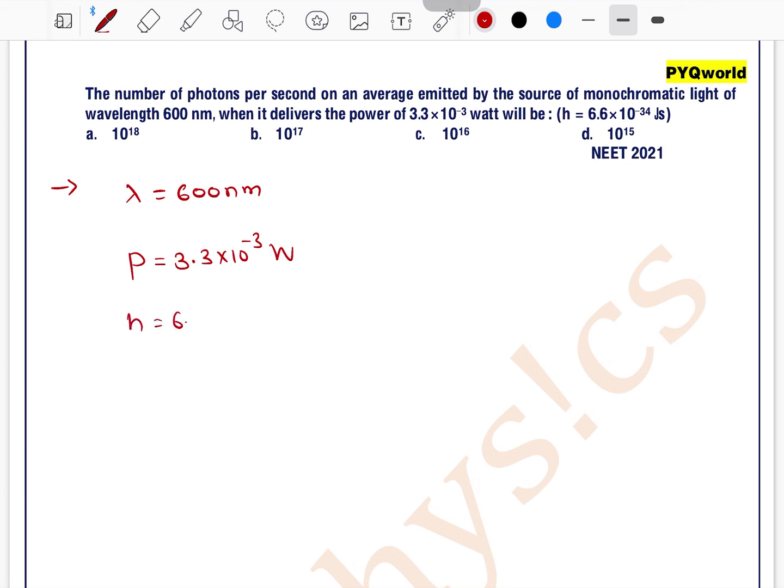h is equal to 6.6 into 10 to the power minus 34 joule second. The number of photons, number of photons per unit time we have to find.